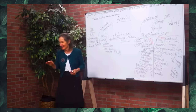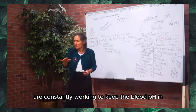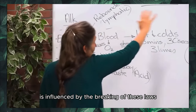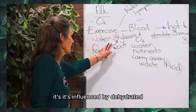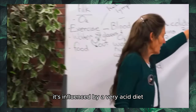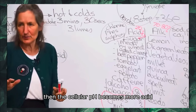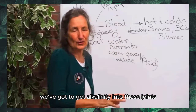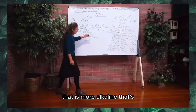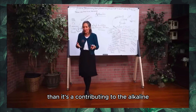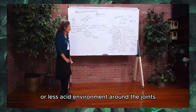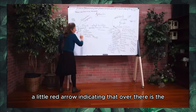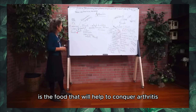The blood pH never changes — your lungs and kidneys are constantly working to keep blood pH where it should be. But the cellular pH can change, and it is influenced by the breaking of health laws: dehydration, lack of oxygen, and a very acid diet all make the cellular pH more acid. That is where arthritis and gout like to thrive. When your blood carries more alkaline food, it contributes to a less acid environment around the joints — that is the food that will help to conquer arthritis.